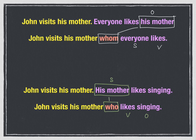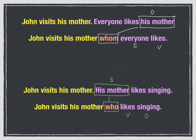The third sentence: John visits his mother; his mother likes singing. To combine these two sentences, we use who: John visits his mother who likes singing. Why should I use who here instead of whom? Which word is replaced by who, and which word is replaced by whom? Can you see that in the first two sentences, whom is replacing the object 'his mother', but in the second part, who is replacing 'his mother' as the subject of the original sentence.